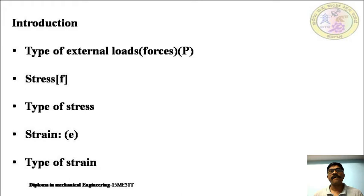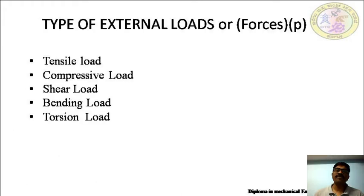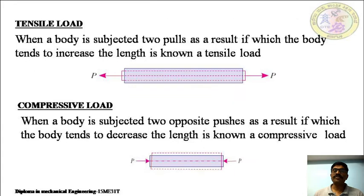Next, we will come to know about types of external loads or forces: tensile load, compressive load, shear load, bending load, and torsion load. When a body is subjected to two pulls, as shown in the figure, the body tends to increase its length — this is known as tensile load.